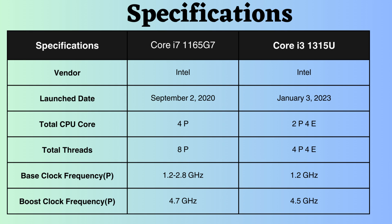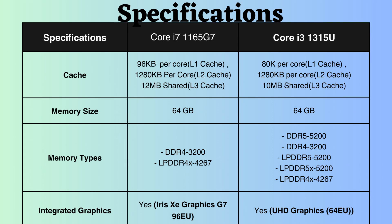The L1 cache of the Core i7-1165G7 is 96 KB per core, whereas that of the Core i3-1315U is 80 KB per core. The larger L1 cache in the i7-1165G7 is advantageous for applications heavily reliant on accessing small amounts of data. Both processors share a 1,280 KB per core L2 cache. For L3 cache, the i7-1165G7 features 12 MB, while the Core i3-1315U has 10 MB, which is beneficial for working with large datasets exceeding L1 and L2 capacity.